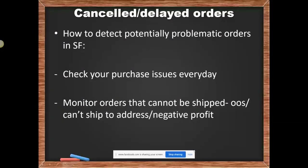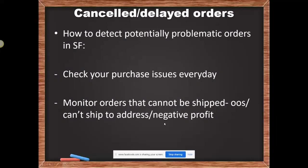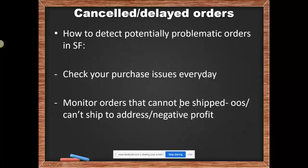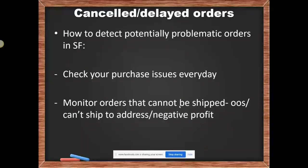Those are the three very common reasons why orders are failing and showing up in Purchase Issues. If you check your Purchase Issues every day, you'll see these failed orders and can decide what to do with them in advance, rather than waiting for them to show up in your eBay store as overdue orders.